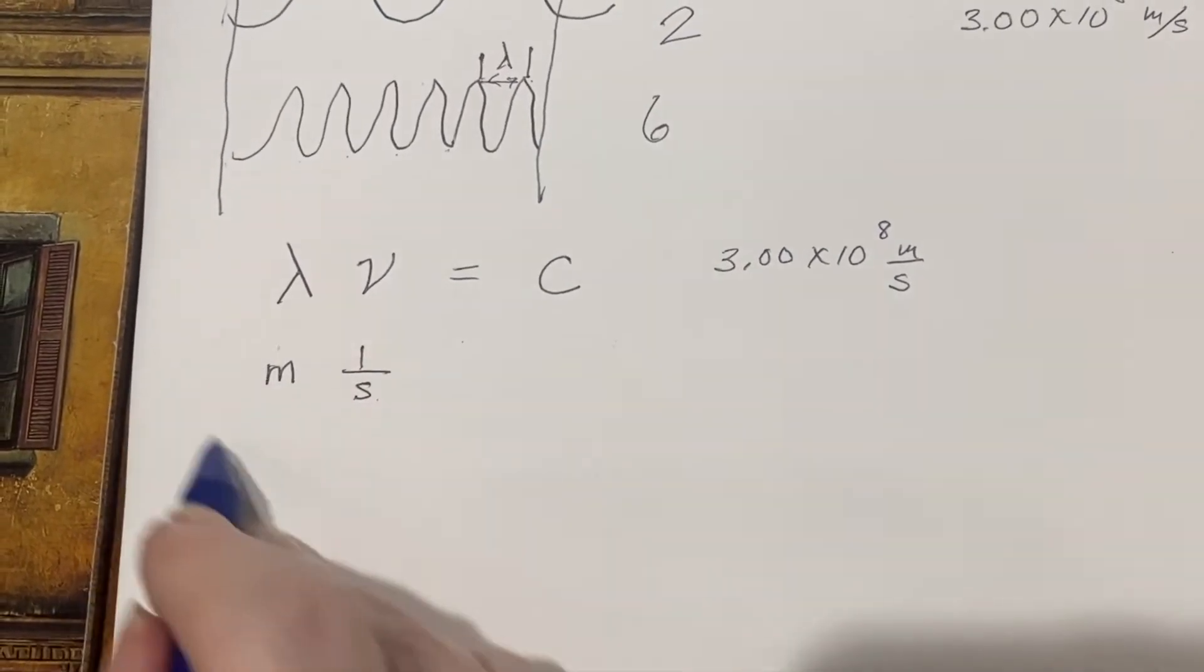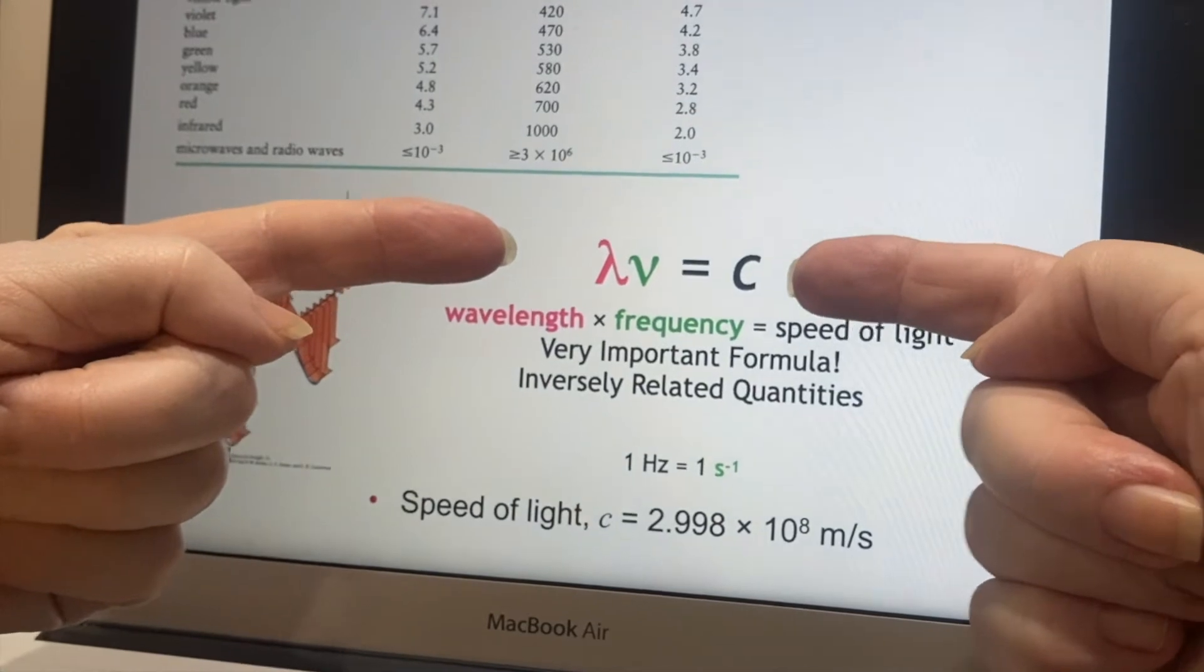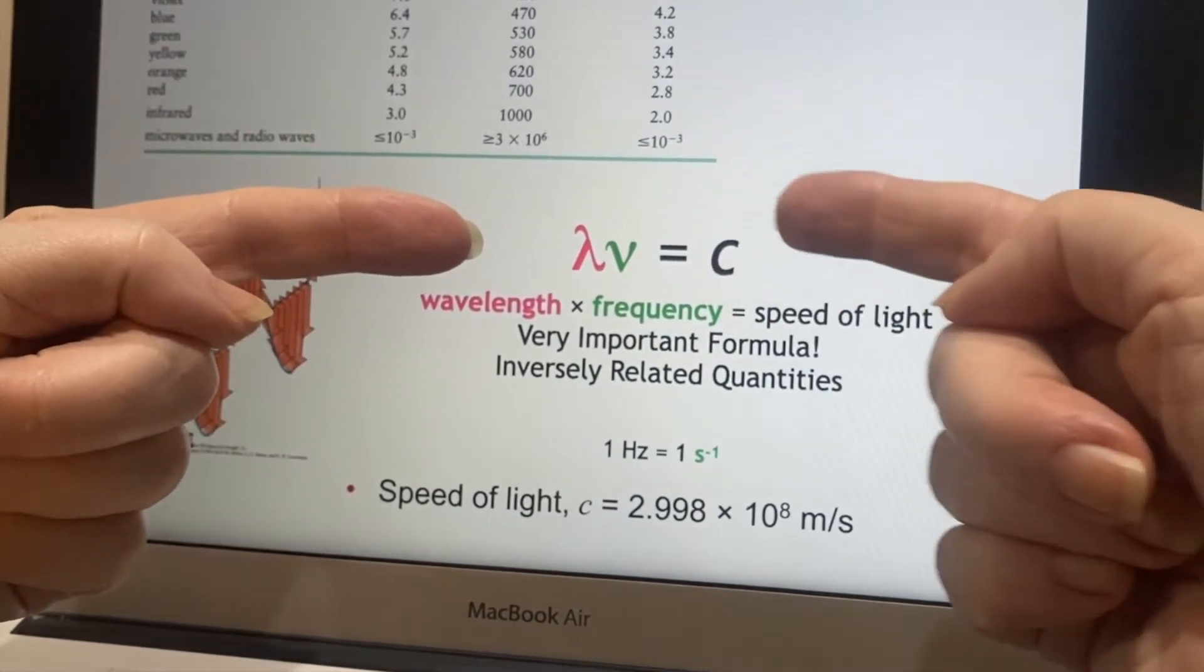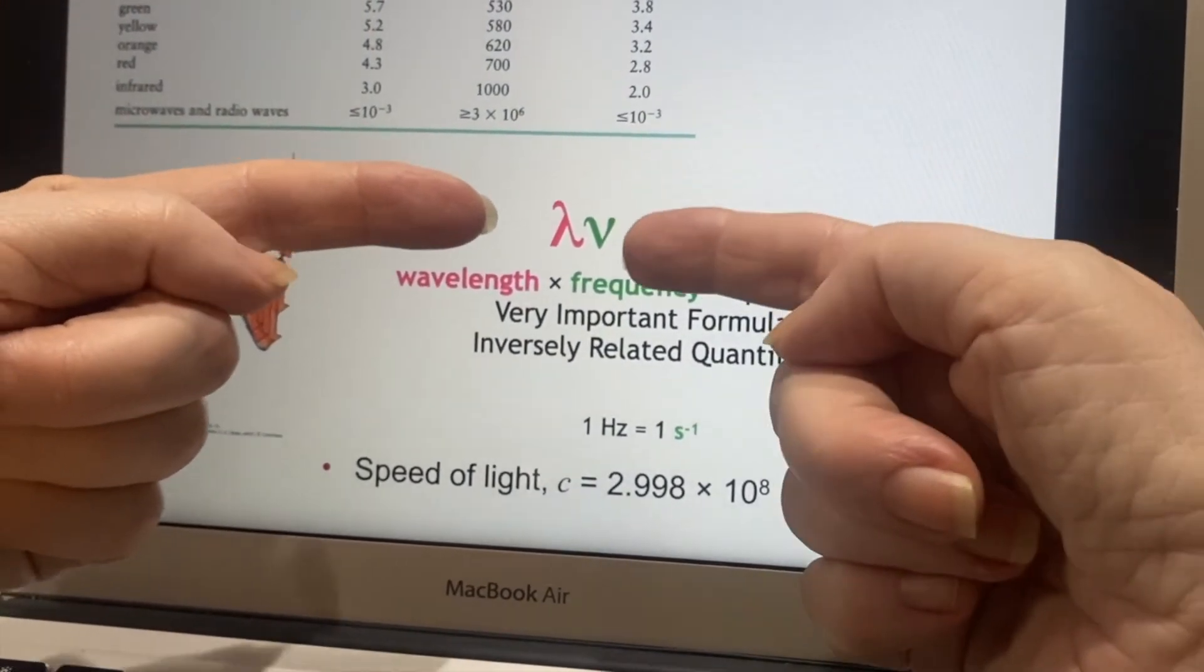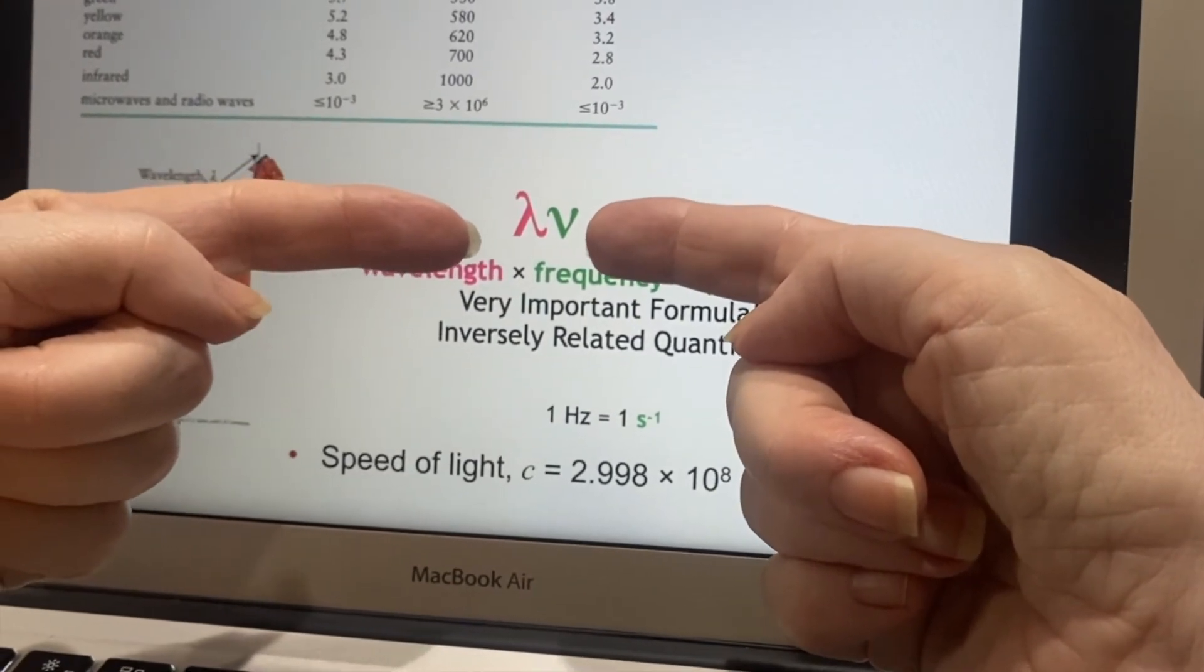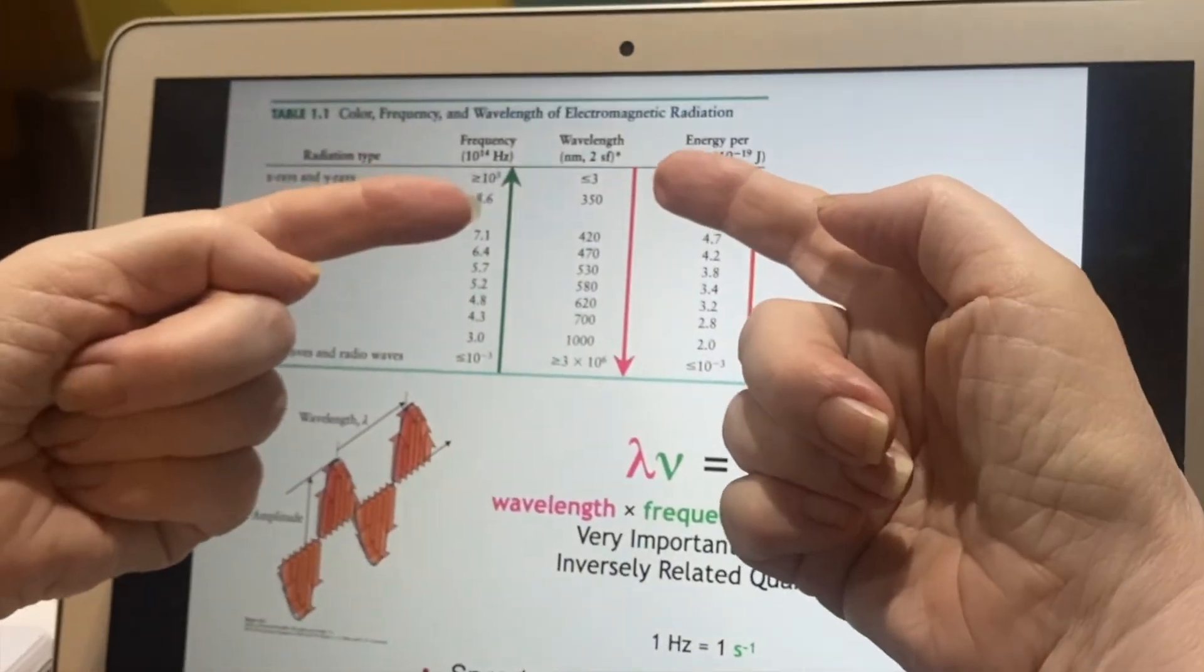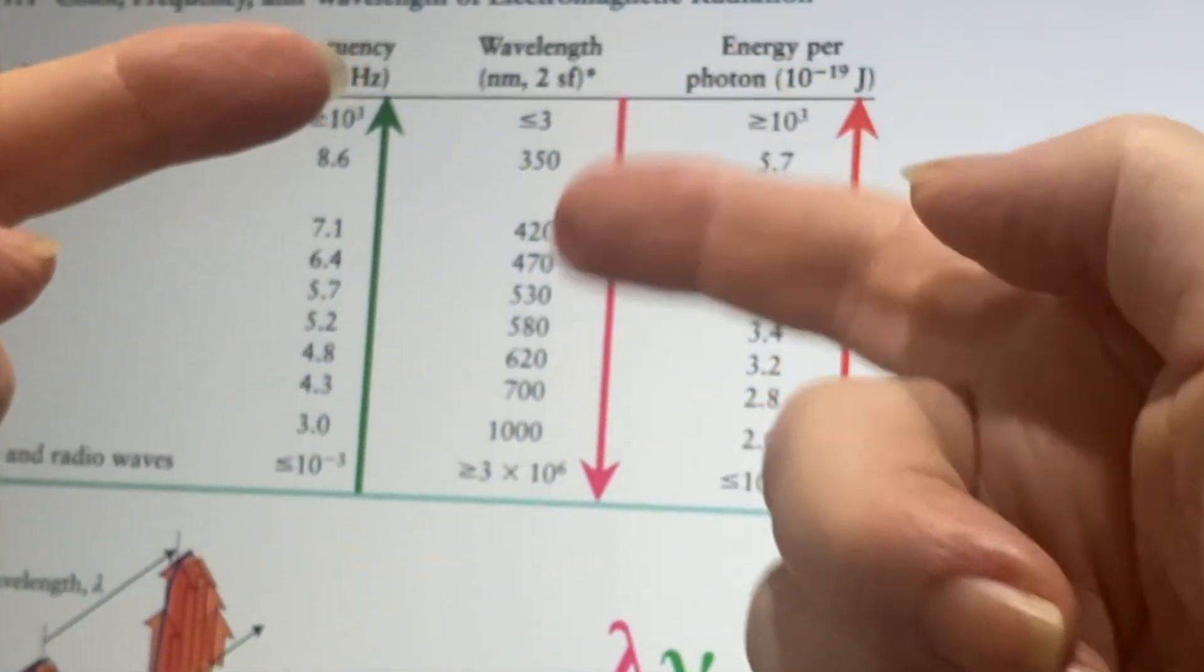If we look at the dimensional analysis, it makes sense. When we see that formula, it means that since this is a constant, the speed of light is a constant, that these guys are inversely related. If one of them goes up, the other one has to go down. That's what we see here. As these go up, these are going down.